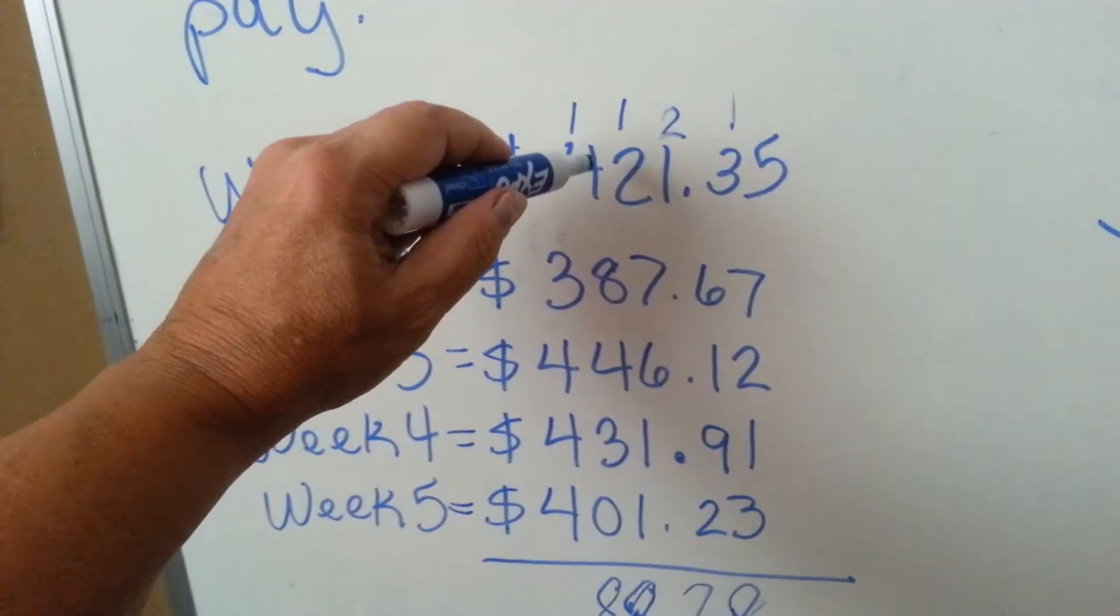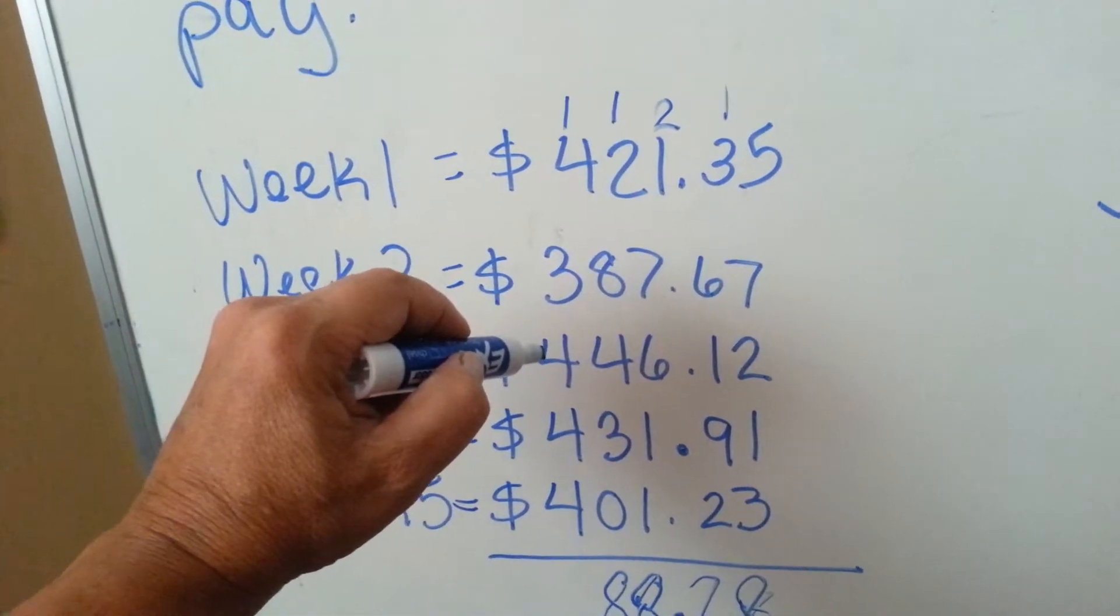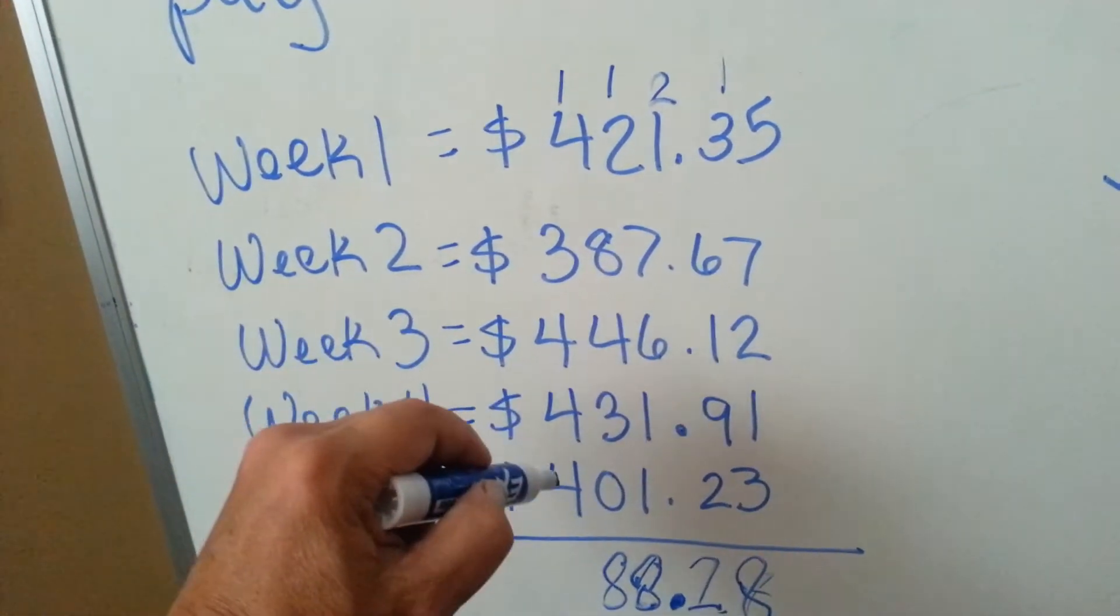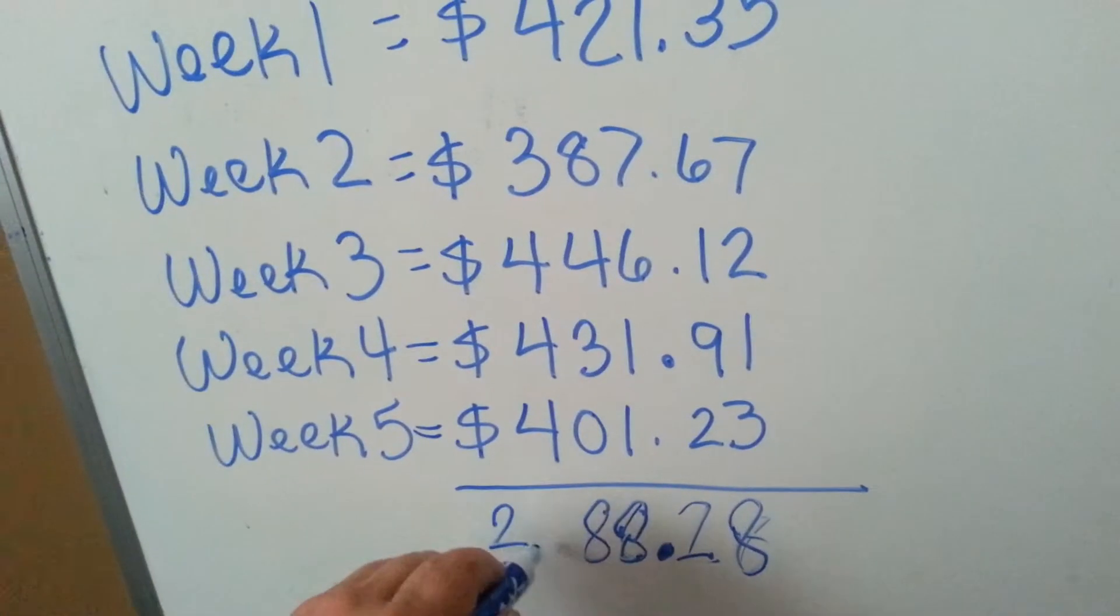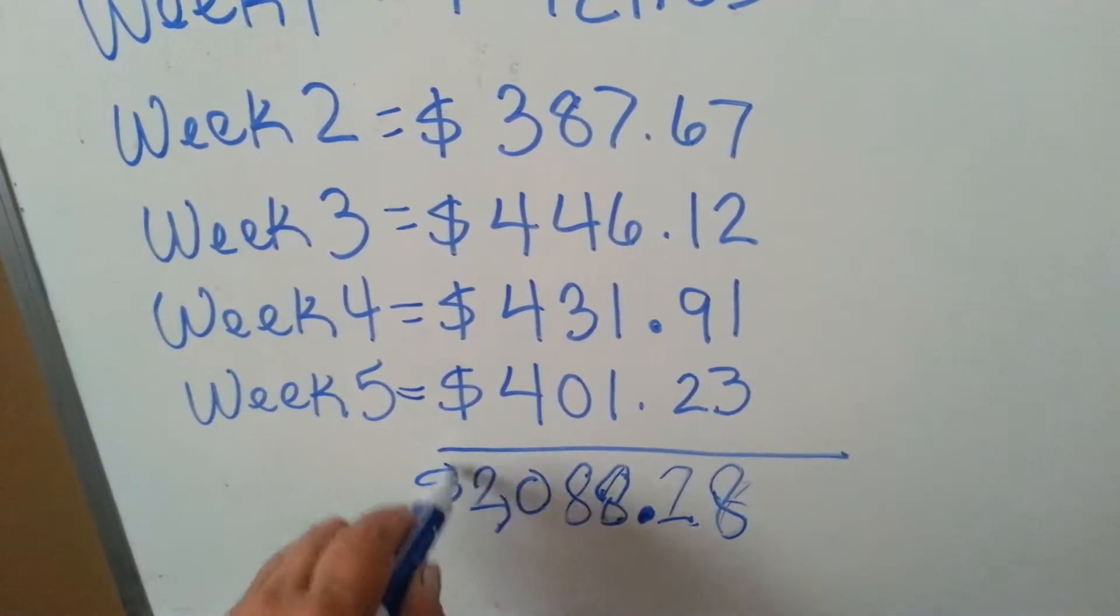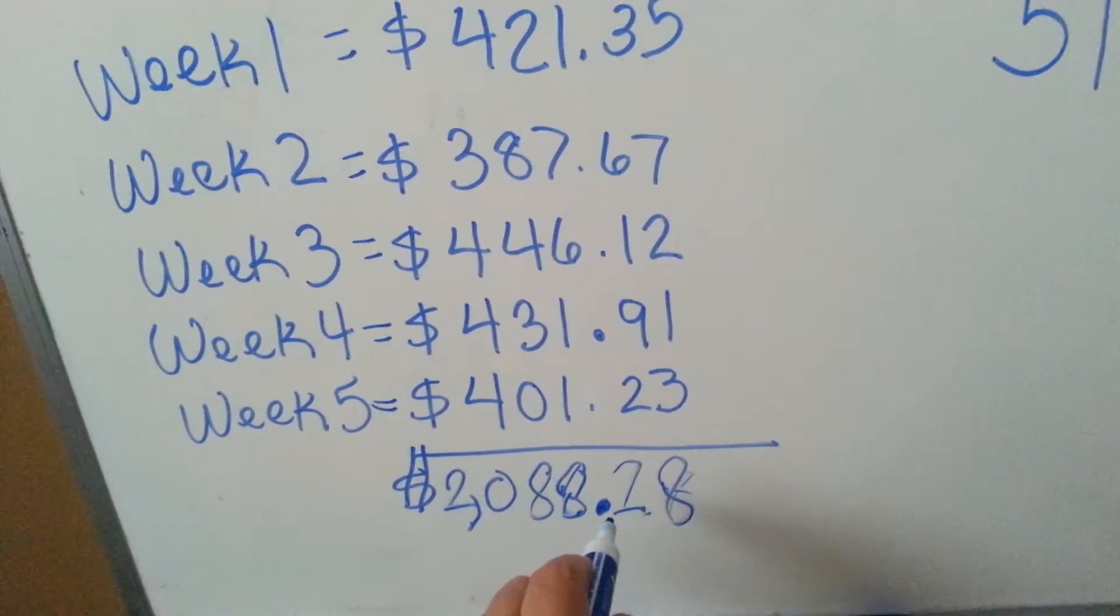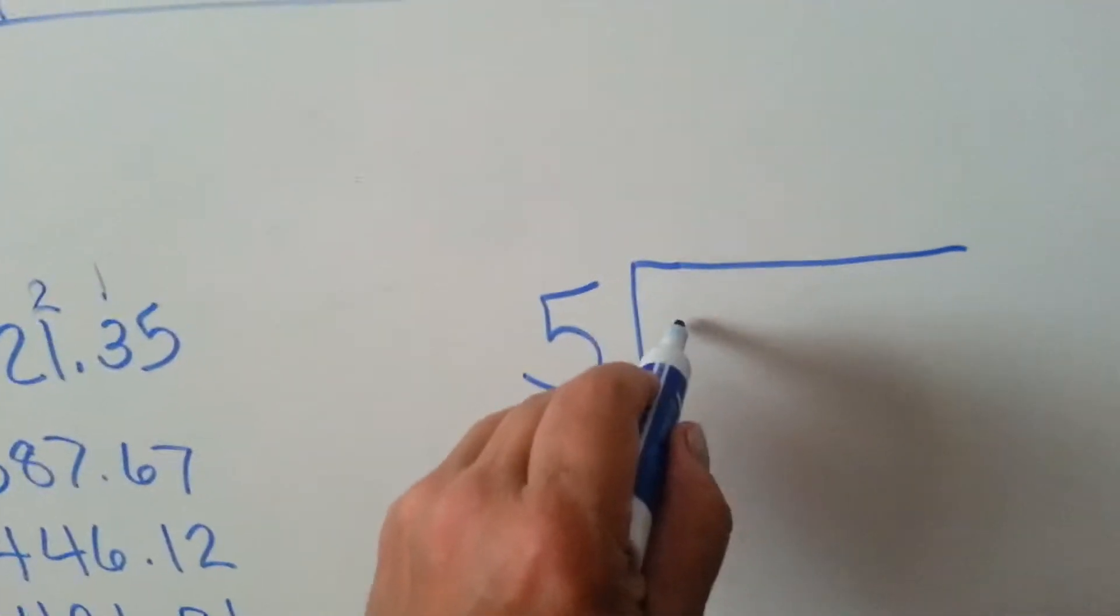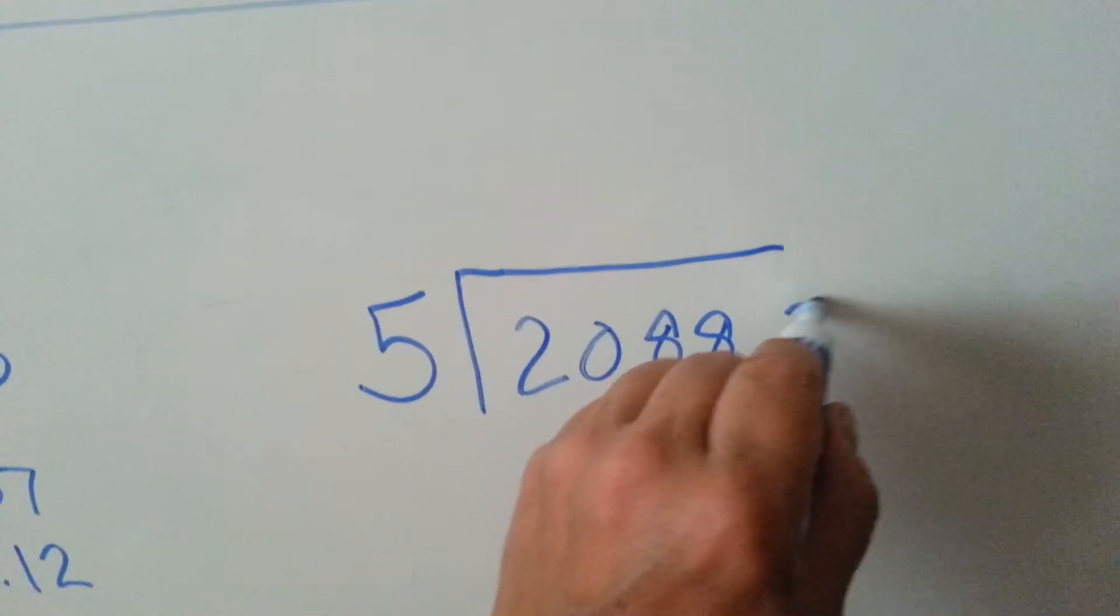So, 1 and 4 is 5, 6, 7, 8, and 4 is 12, and 4 is 16, and 4 is 20. So, in the five weeks, you've made $2,088.28.